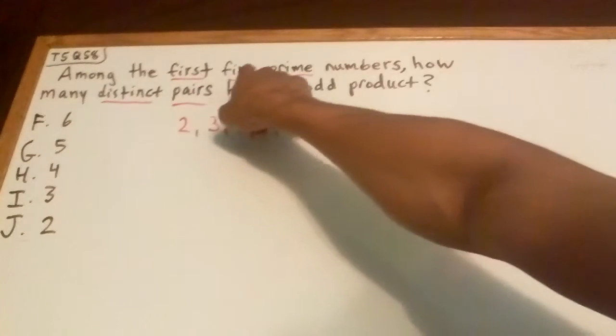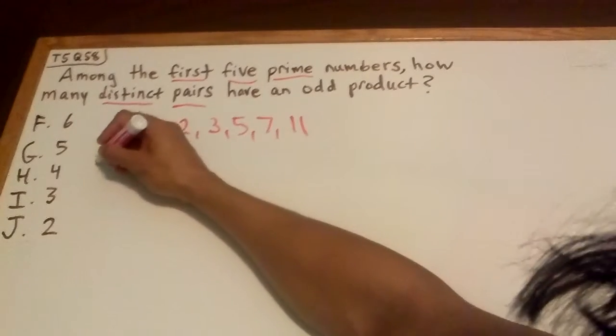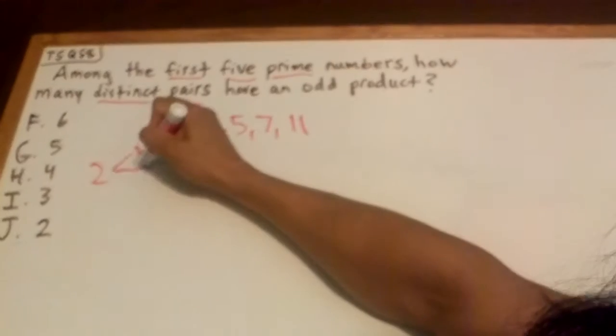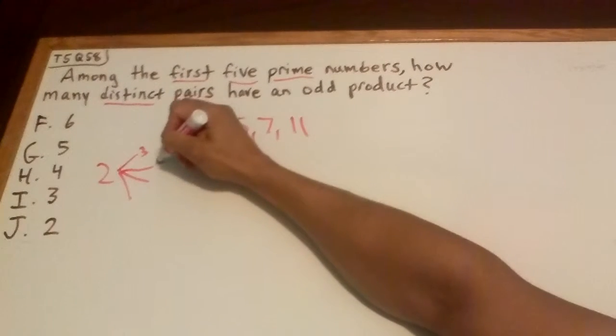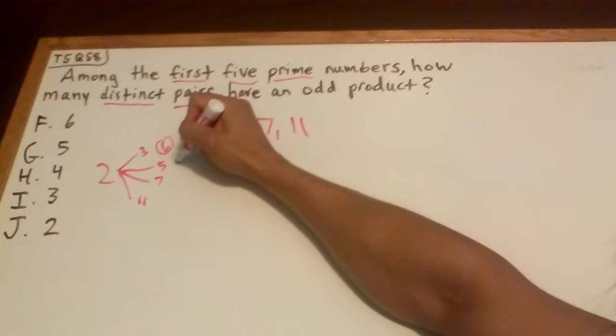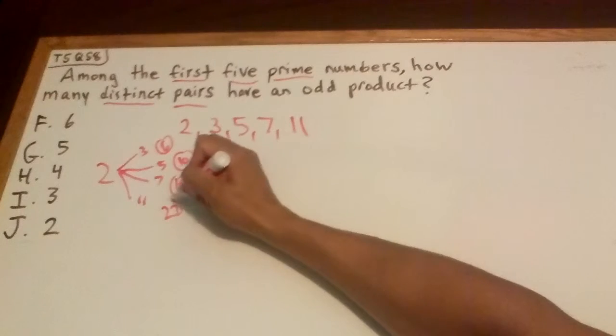Those are the first five prime numbers. And now what we have to do is use what we learned from probability. So this is a bit messy but let's get going. We have to go 2 times 3, 5, 7, 11 times 5, 7, and 11. Here is 6, here is 10, here is 14, and here is 22.